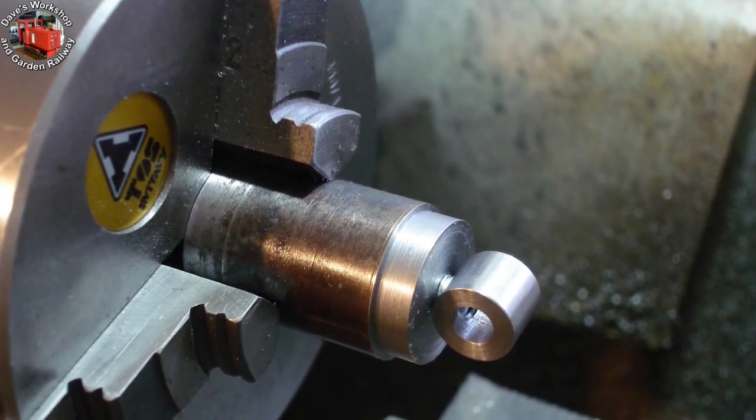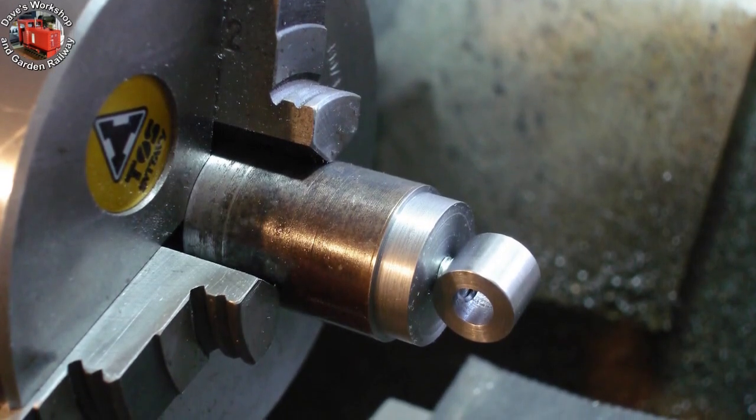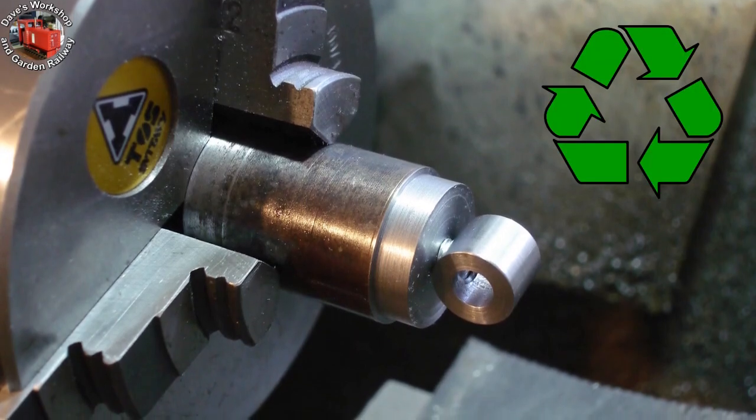Remember this cast piston turning jig from the Whippet project? Well, it used to be a soldering mandrel, and now it's going back to its former role. I do like recycling.